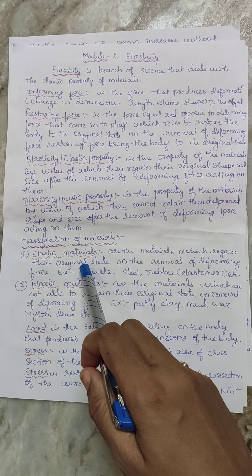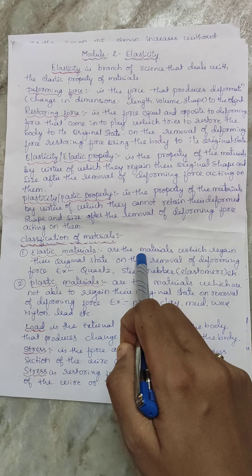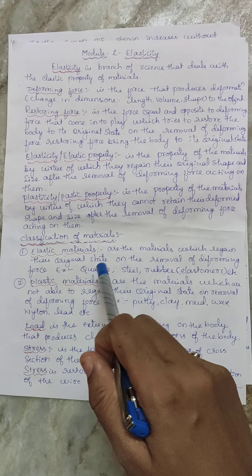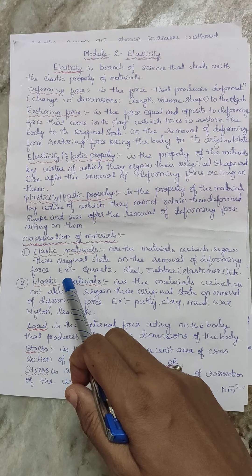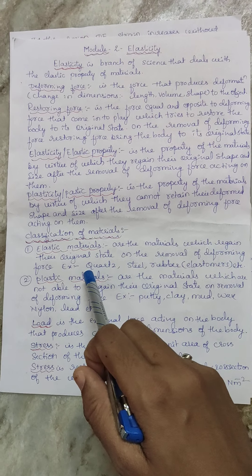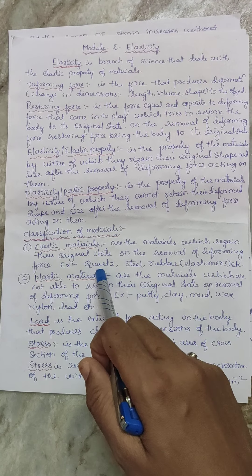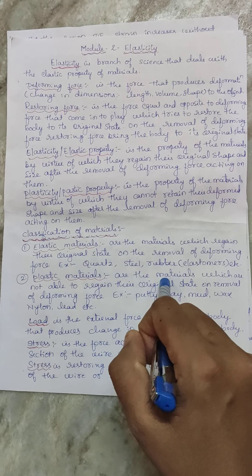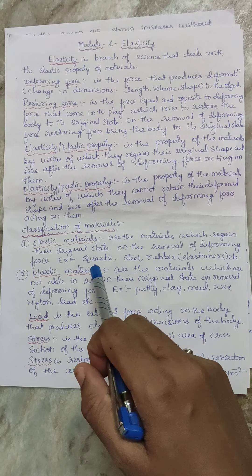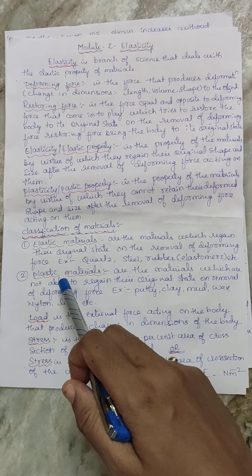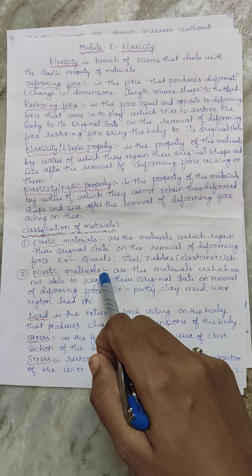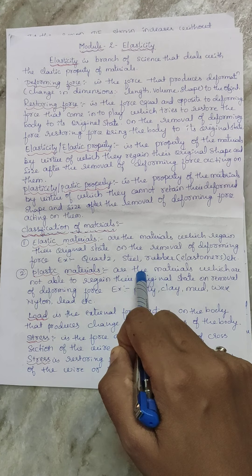Elastic materials are the materials which regain their original state when you remove the deforming force. Examples include cords, steel, and rubber. Rubbers are also called elastomers.